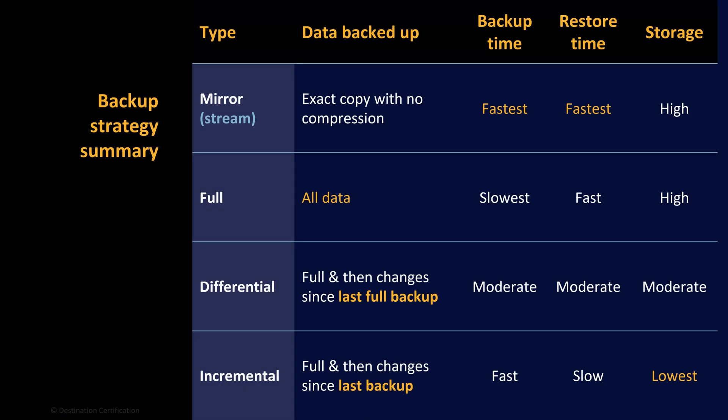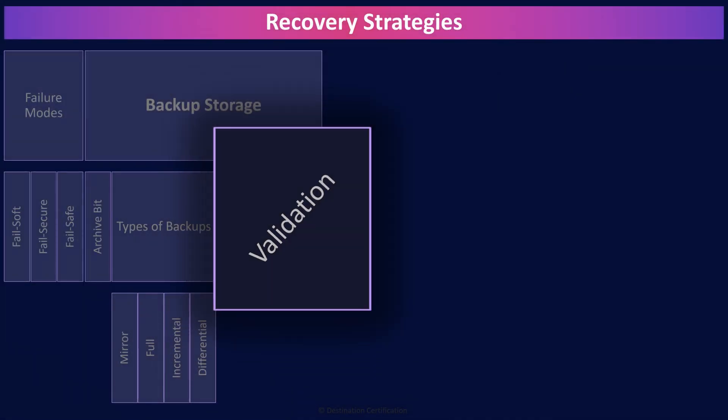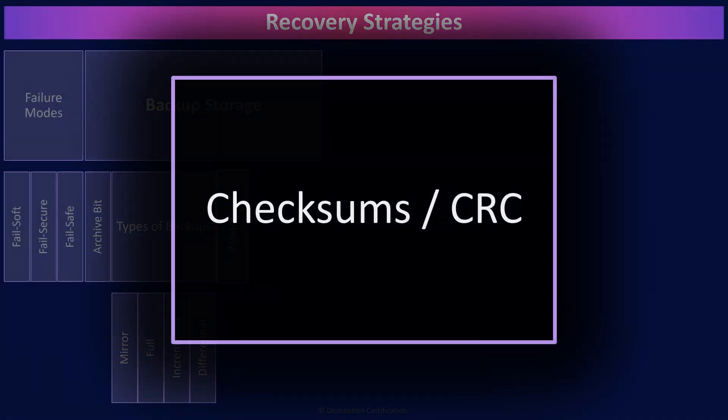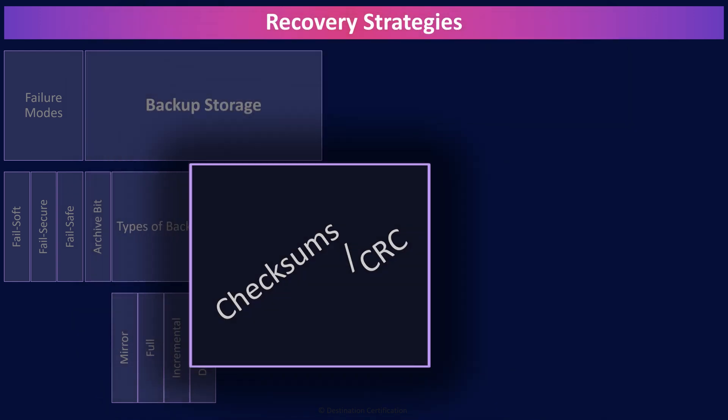Here's a summary of the different types of backups. It is important to validate that backups are occurring correctly. This can be done in numerous ways, including cyclical redundancy checks (CRC checks), checksums, bit-for-bit comparisons of the backup to the original data, or just spot-checking select files. These verification checks can be done while the backup is being performed and also periodically on shelved tapes.